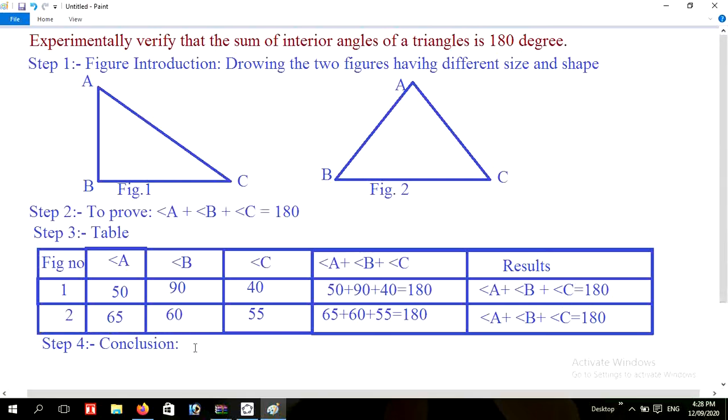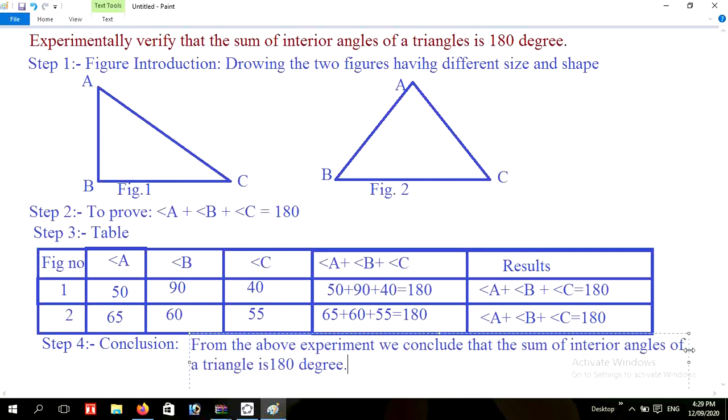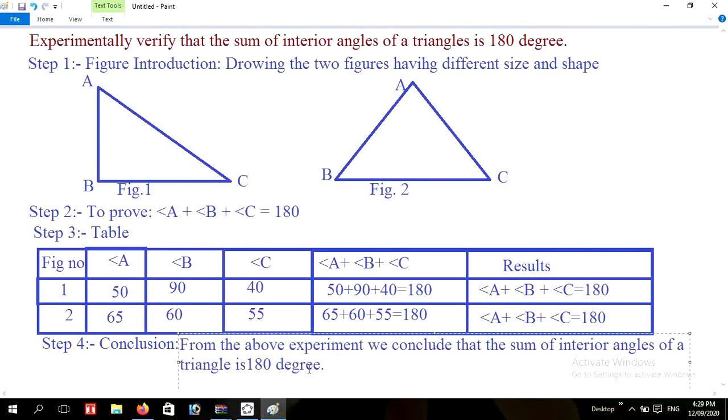Step 4 is conclusion. And write here: from the above experiment, we conclude that the sum of interior angles of a triangle is 180 degrees. In this way we can prove experimentally the statement that the sum of interior angles of triangle is 180 degrees.